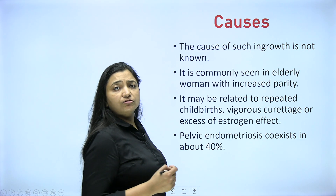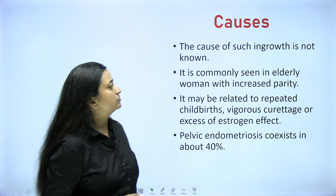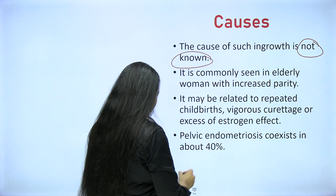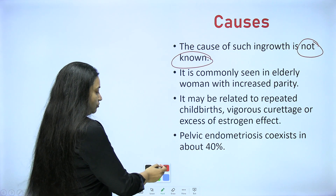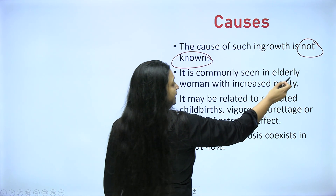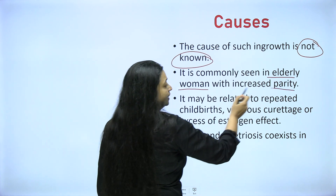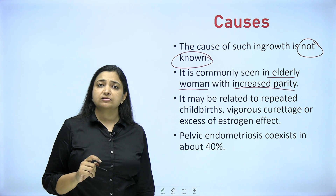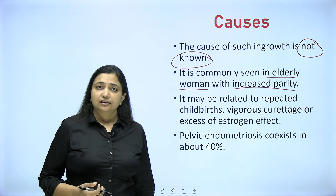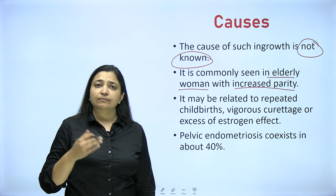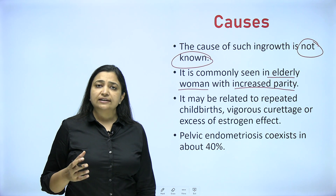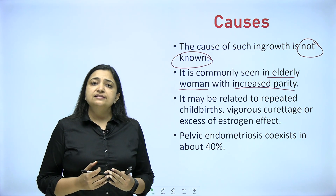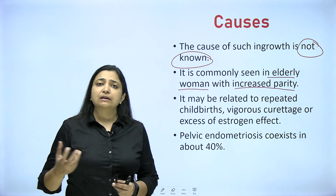What is the cause of such ingrowth? Why does it happen in some patients and not others? The answer is the same as for endometriosis — it is not known. We do not know why it happens, but the risk factors tell us at which age group we will find it. It is commonly seen in elderly women with increased parity, contrary to endometriosis. Endometriosis is a disease of the young — those who have not become pregnant and are menstruating every cycle. Adenomyosis is more common in women in their 40s who have given birth to multiple children or have had multiple dilatations and curettages.